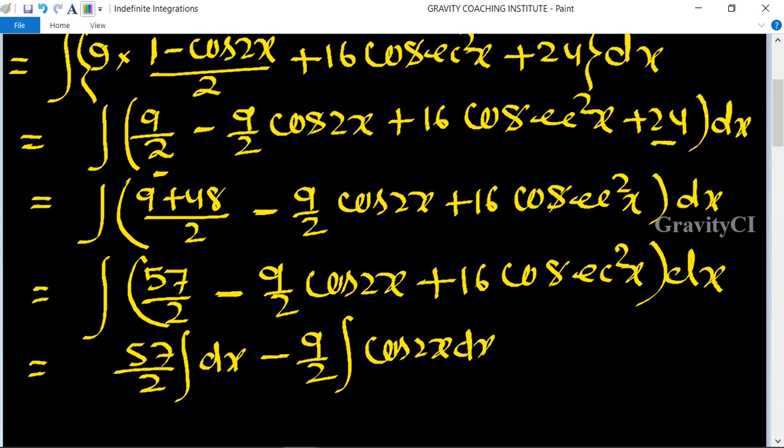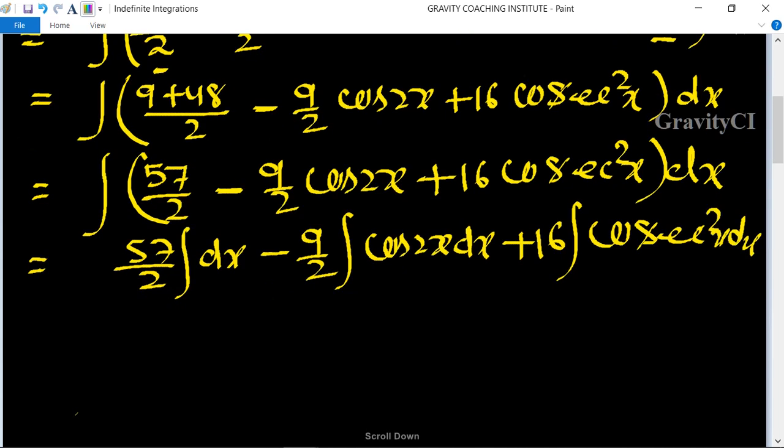cos 2x dx plus 16 integration cosec² x dx. So is equal to 57 upon 2 x minus cos 2x...